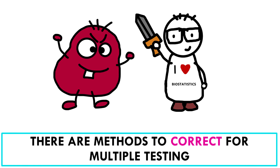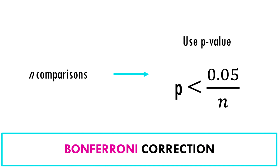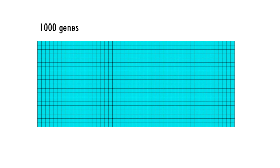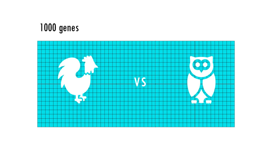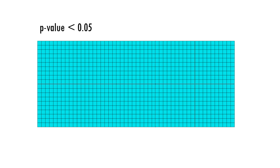Thank goodness we have techniques to correct for multiple comparisons. For example, the Bonferroni correction method says that if you make N comparisons, you should use a p-value threshold of p lower than 0.05 divided by N. So imagine we want to test a thousand genes to see if they're correlated to being a morning person versus a night owl. We can choose a p-value of 0.05 — that is, the probability of saying that a gene is significant when it is actually not is 5%.